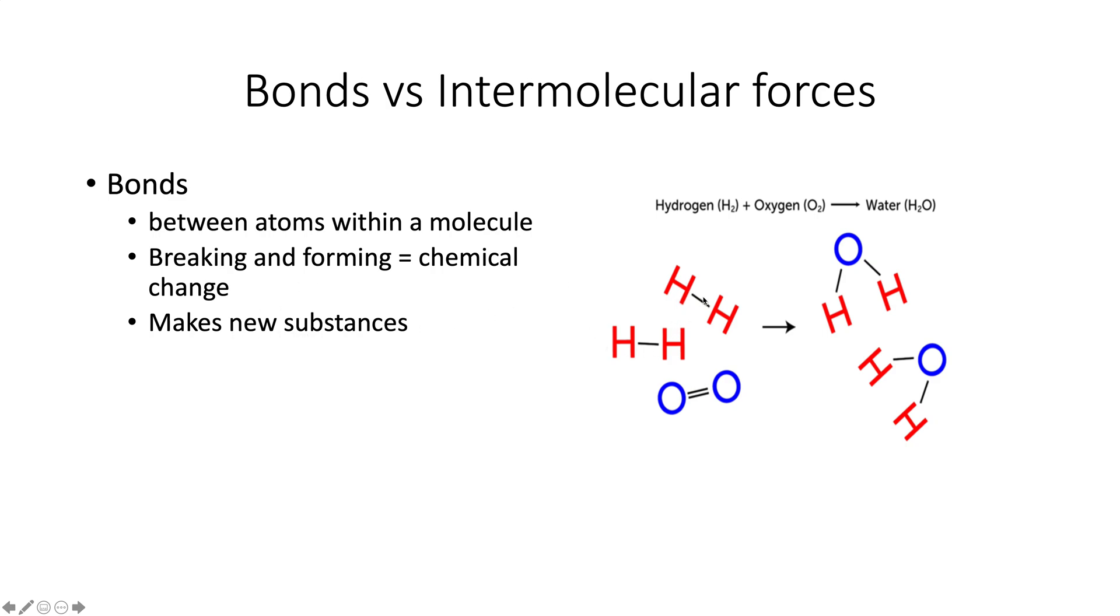If we look over to the right, you can see, this is an example of a chemical change, hydrogen and oxygen becoming water, that you can see that the bonds between the hydrogens have been broken, as have the bonds between the oxygens, and new bonds have been formed to make new substances.